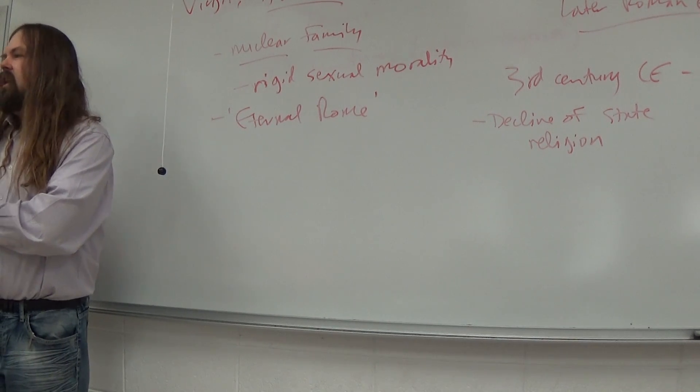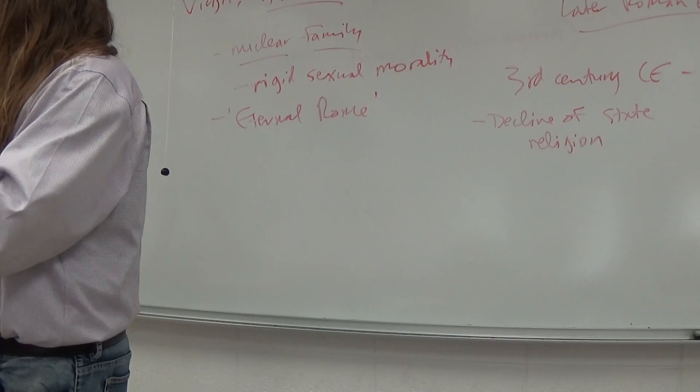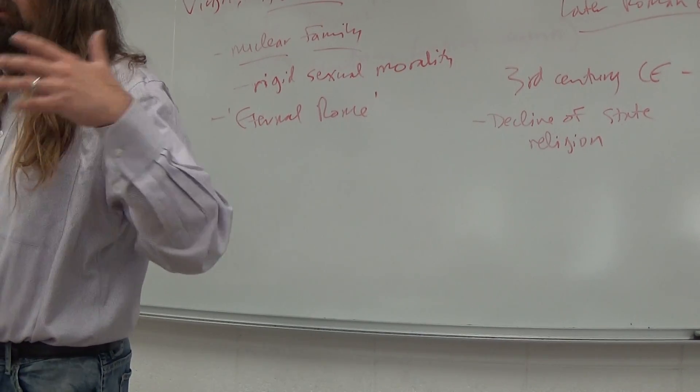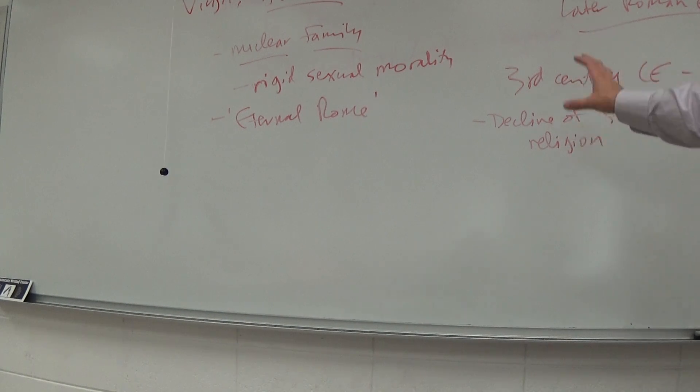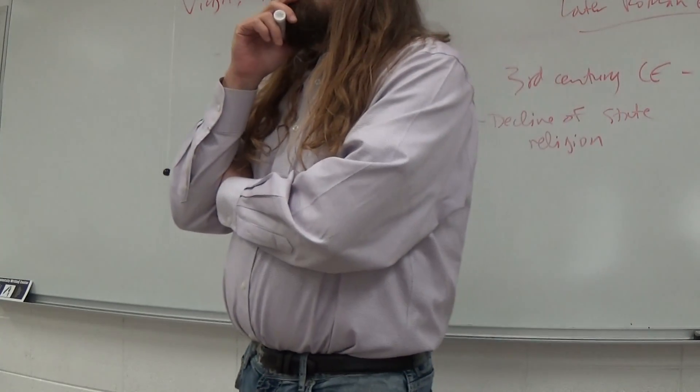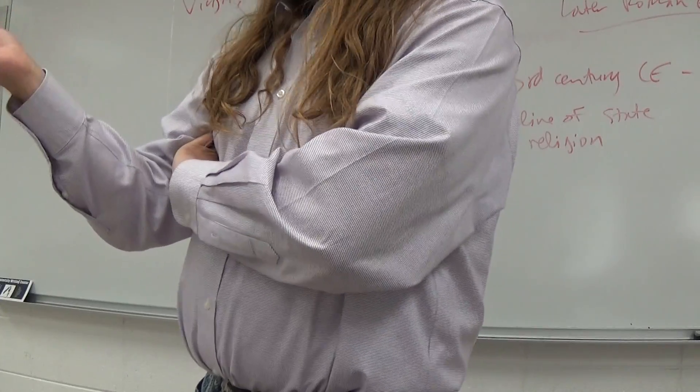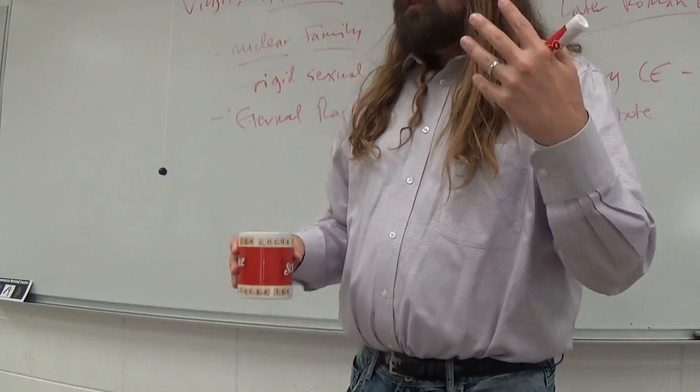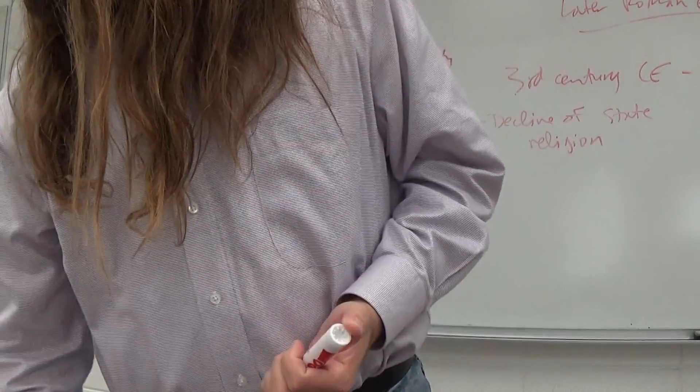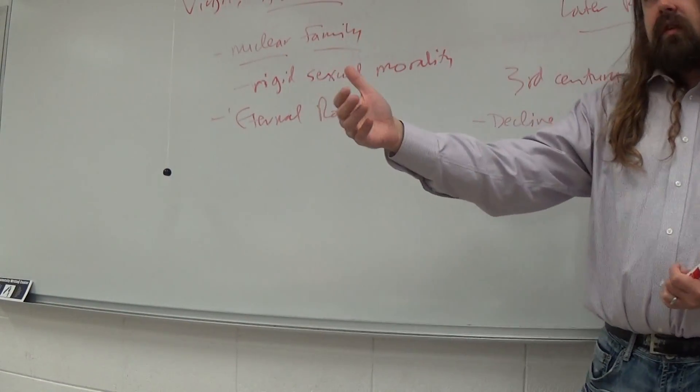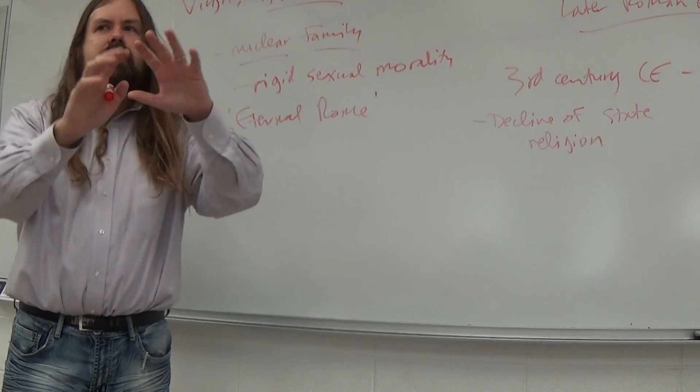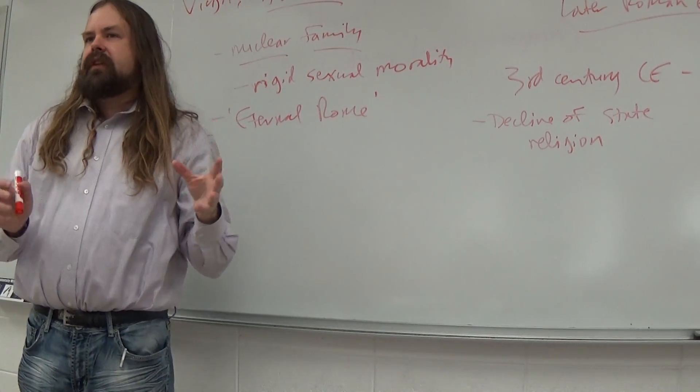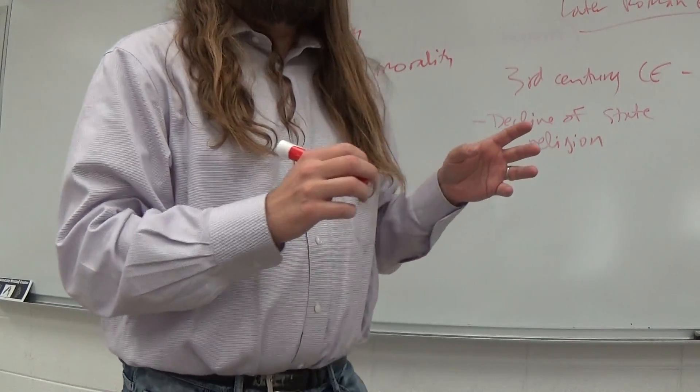Christianity could not be incorporated into the imperial cult. Because instead of the emperor being the center, the Judeo-Christian god is the center. So, there's this huge patchwork of religious traditions in the empire in conflict. On the one hand, you have the state religion. You also have, particularly among Greek aristocrats, a philosophical position called Neoplatonism.